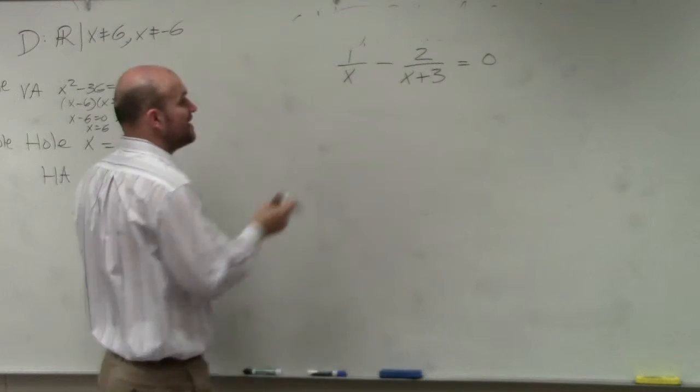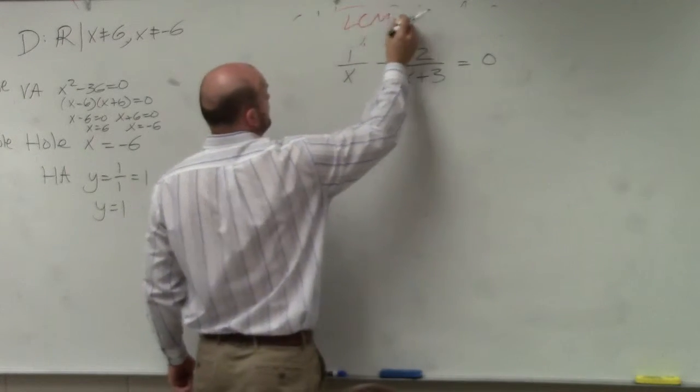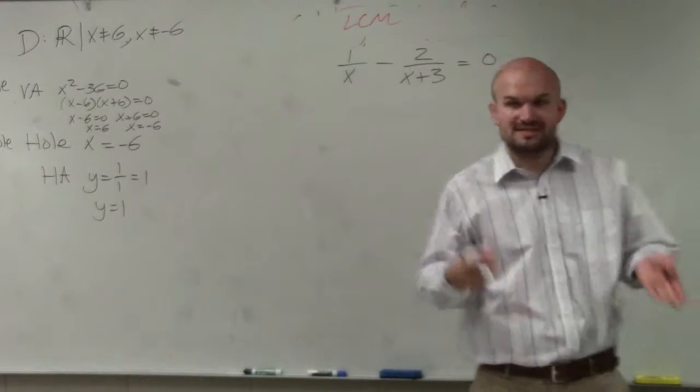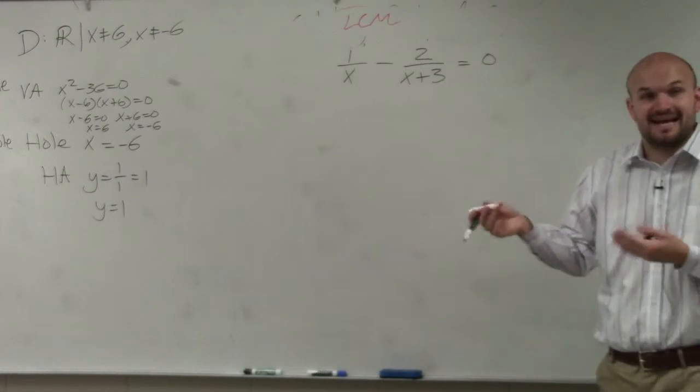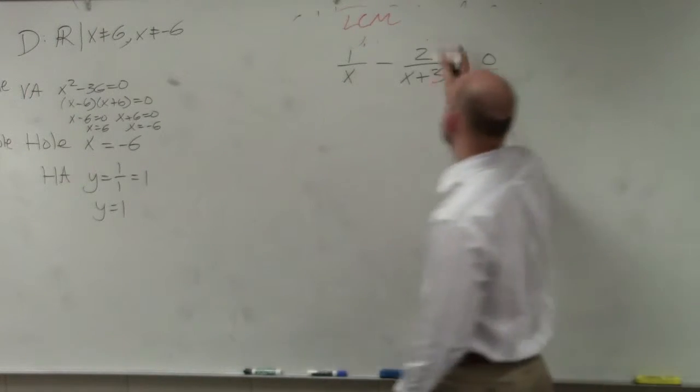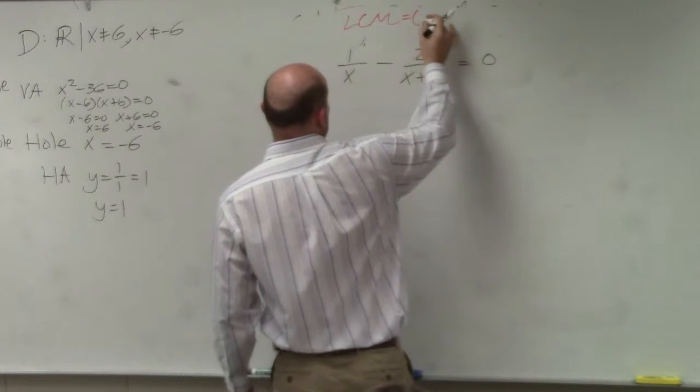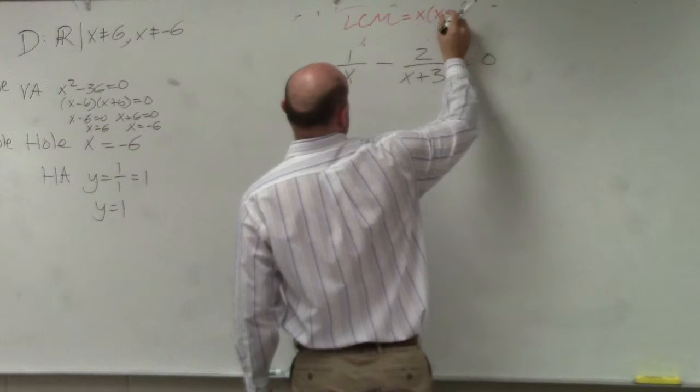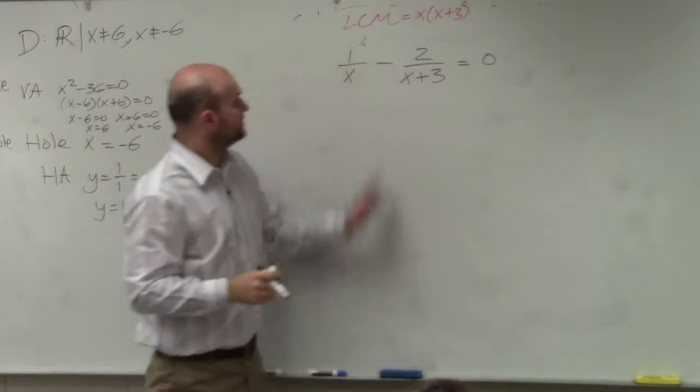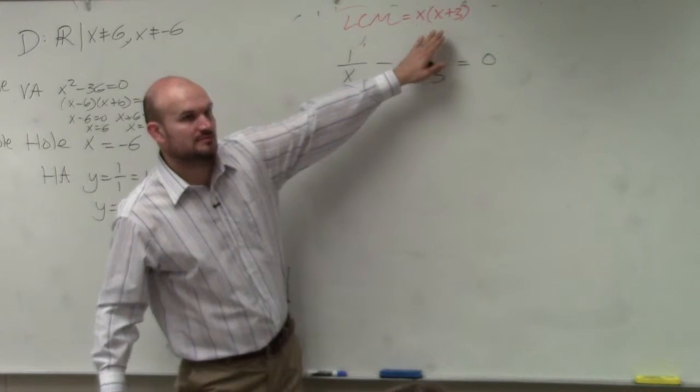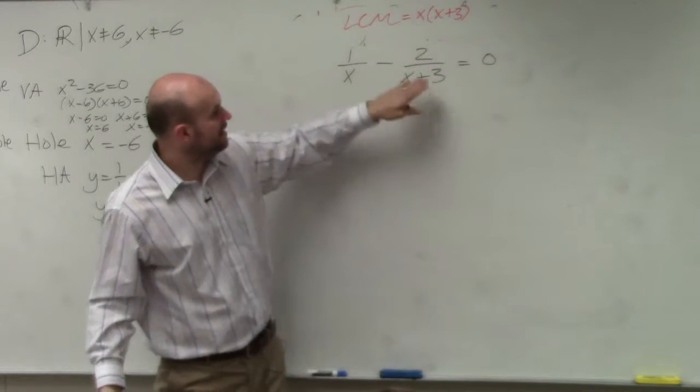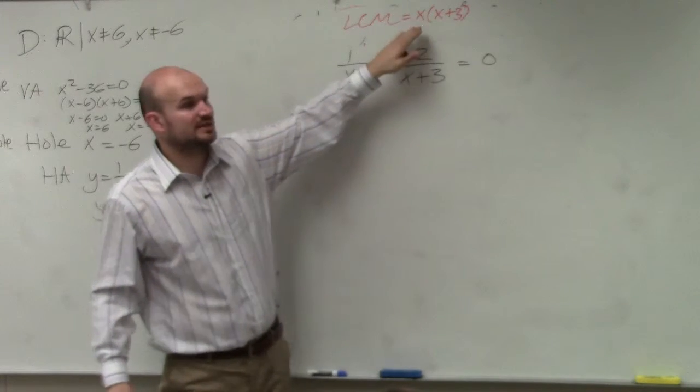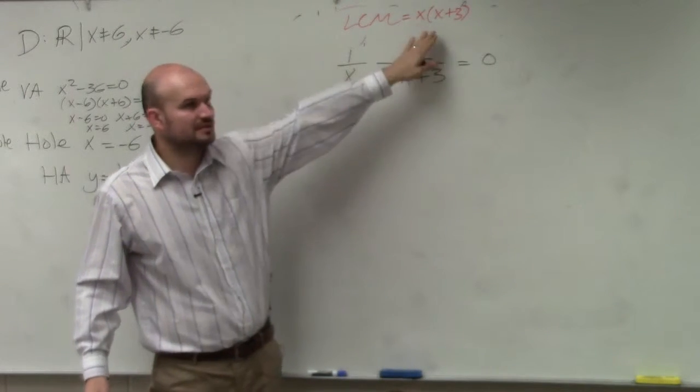To get rid of the fractions, we need to find the least common multiple, or denominator, basically. So what is the smallest expression that x and x plus 3 divides into? Well, that is just simply x times x plus 3, because x divides into that leaving you with x plus 3, and x plus 3 divides into that leaving you with an answer of x. So they both divide into that expression.